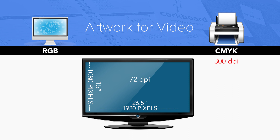If you provide your artwork in JPEG or PNG, you'll have to make it as close to the size needed or larger to look sharp in your video. You don't want to enlarge these file types too much — they'll start to get blurry or fuzzy.